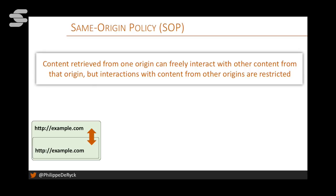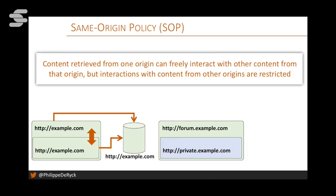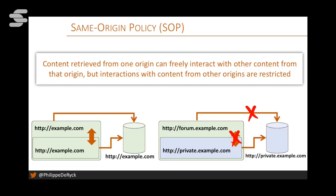Same-origin contexts can inspect each other's DOM and basically do whatever they want. If you have an origin-protected resource like storage in the browser, both contexts share the same storage because it's based on origin. But if you change the example to subdomains — forum.example.com and private.example.com — these are no longer the same origin because the host is different. They cannot freely interact, and each origin can only access its own associated data store, not the other's. This is a fundamental security policy that is actually more important than you might imagine on the web today.